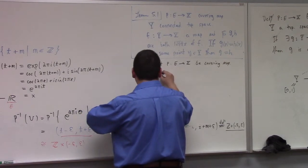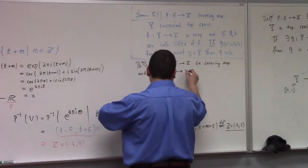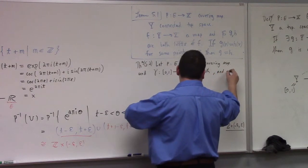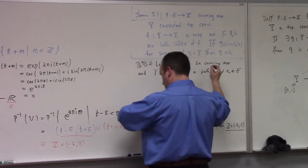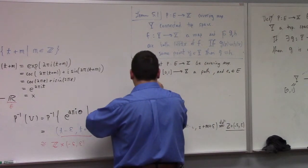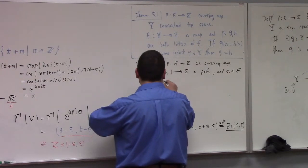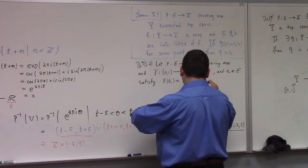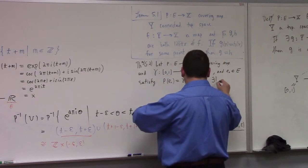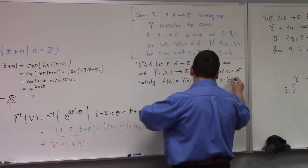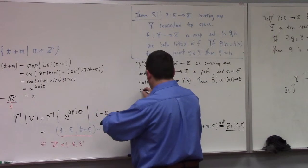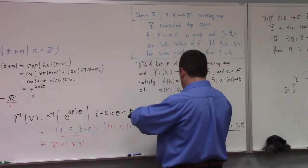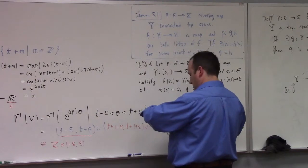And e₀ an element of E satisfying p(e₀) equal to γ(0). Then there exists a unique path α from [0,1] into E such that α(0) is equal to e₀ and p composed with α equals γ.